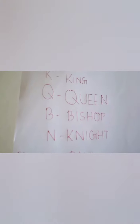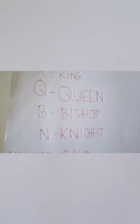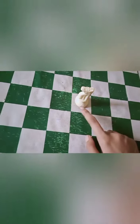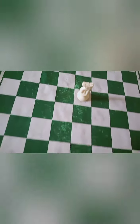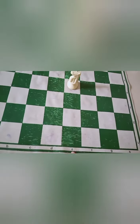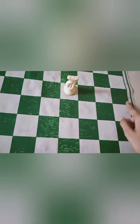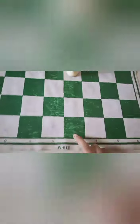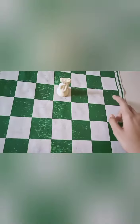Knight. The notation for knight is N. Now let's place this knight over here. The notation is N, and the square name is E4. So here N E4.